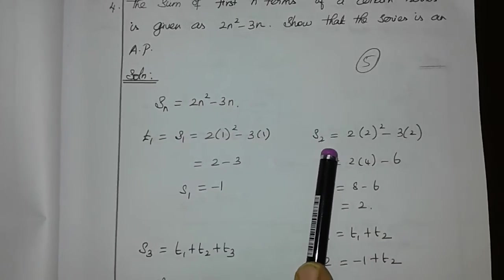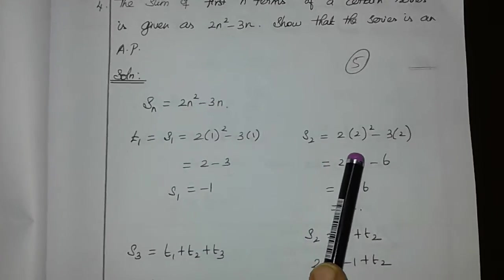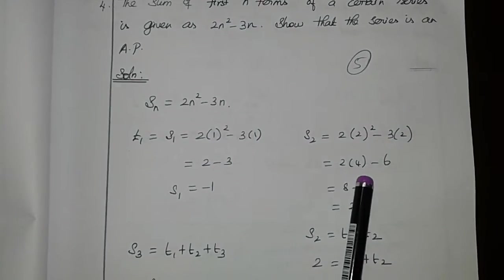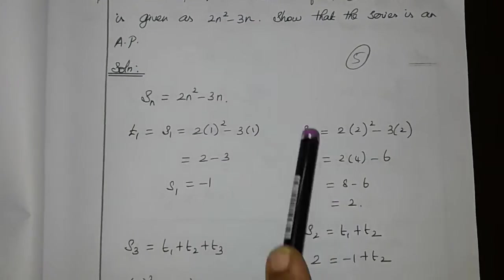When n is equal to 2, S2 is equal to 2 of 2 whole square minus 3 into 2. 2 square is equal to 4. 2 into 4 is equal to 8. 8 minus 6 is equal to 2. This is S2.